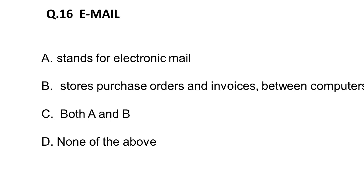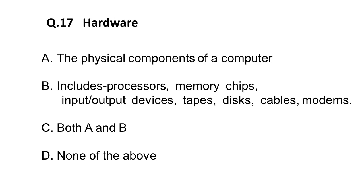Next question: email — this is an easy question. Options are: A — electronic mail, B — stores and processes purchase orders and invoices between computers, C — both A and B, D — none of the above. The correct answer is A — email stands for electronic mail.